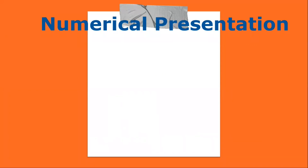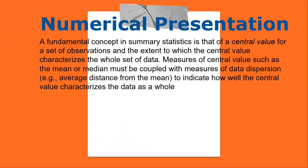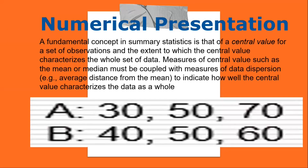A fundamental concept in summary statistics is that of a central value for a set of observations and the extent to which the central value characterizes the whole set of data. Measures of central value such as the mean or median must be coupled with measures of data dispersion to indicate how well the central value characterizes the data as a whole. Commonly used methods are mean, median, mode, geometric mean, etc.